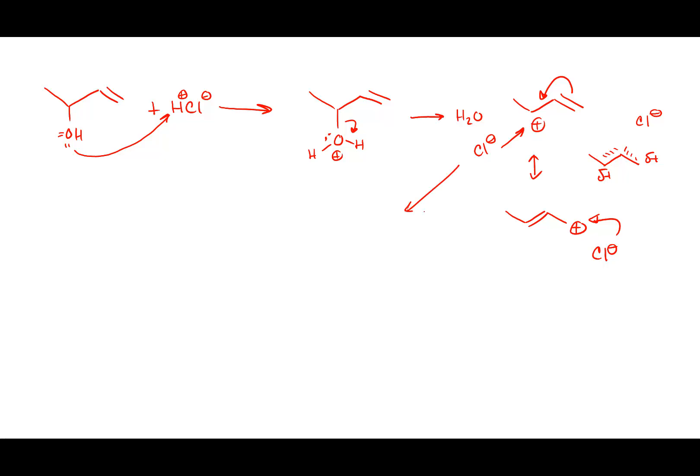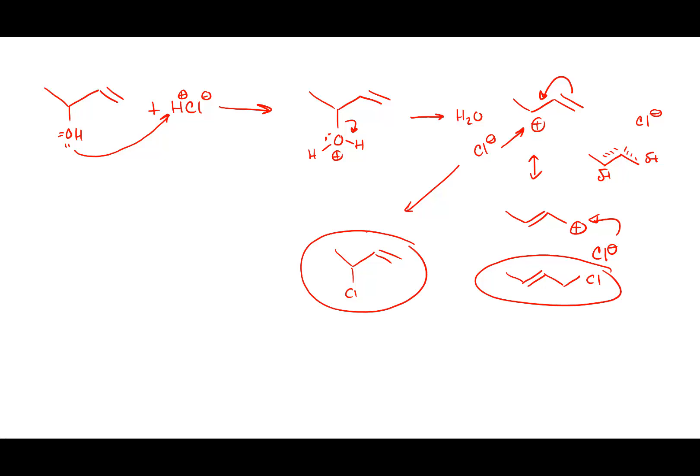So my two products are: one with the chloride here, and one with the chloride there. If there were another double bond in place — which we'll cover in the next chapter — I could write a third resonance structure. The idea is I'm delocalizing the positive charge. Now the question is: I've got two products — which one is the major product?